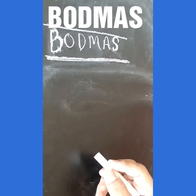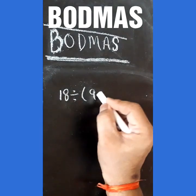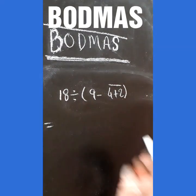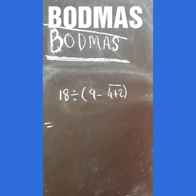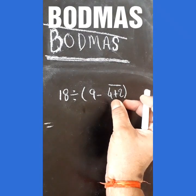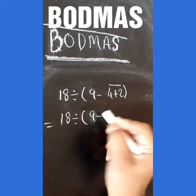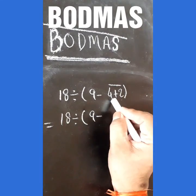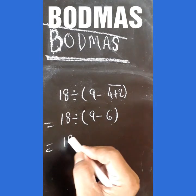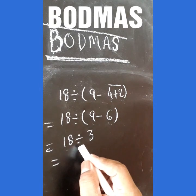Let us take a simple example: 18 divided by (9 minus 4 plus 2), having a bar on it. We have already discussed that we solve the bracket first. In this bracket we have a bar, so we first solve the bar — 9 minus 4 plus 2 — we will add them and get 6. Now we divide 18 by 6 and we get the answer 3.